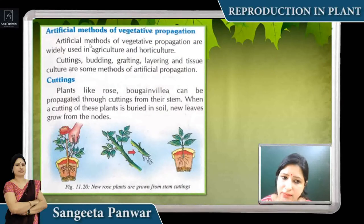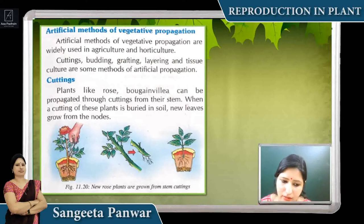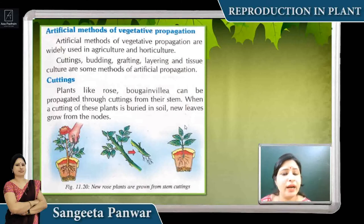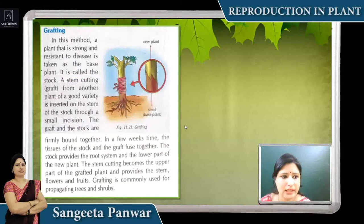Vegetative propagation can also be done by artificial methods. A very simple method is cutting — for example, a twig of a rose is cut and grown in a plant, and then after some time it grows into a new plant.